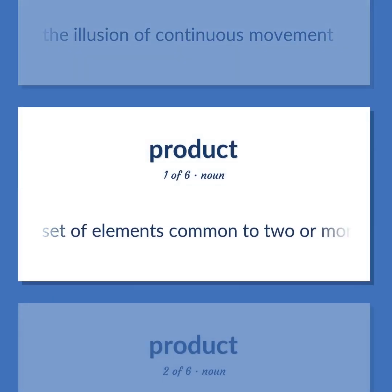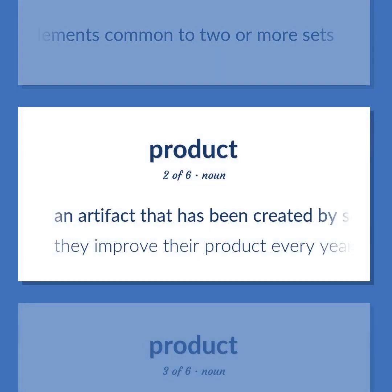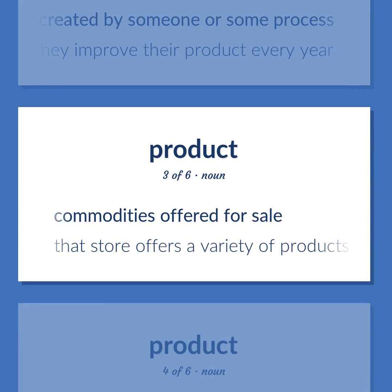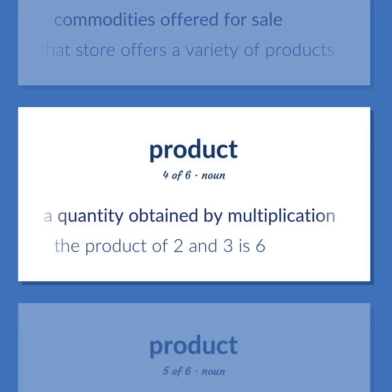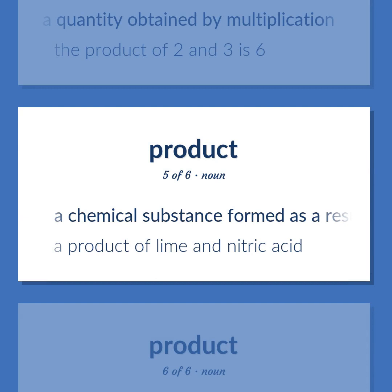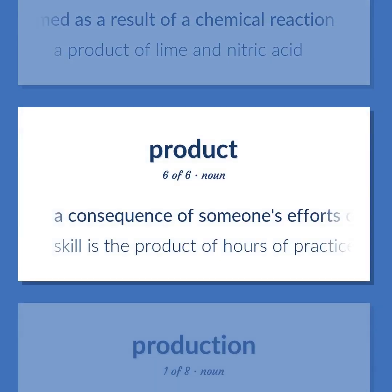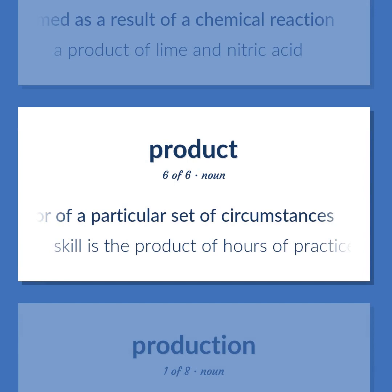Product (noun): The set of elements common to two or more sets. Also, an artifact that has been created by someone or some process. Example: They improve their product every year. Commodities offered for sale. Example: That store offers a variety of products. A quantity obtained by multiplication. Example: The product of two and three is six. A chemical substance formed as a result of a chemical reaction. Example: A product of lime and nitric acid. A consequence of someone's efforts or of a particular set of circumstances. Example: Skill is the product of hours of practice.